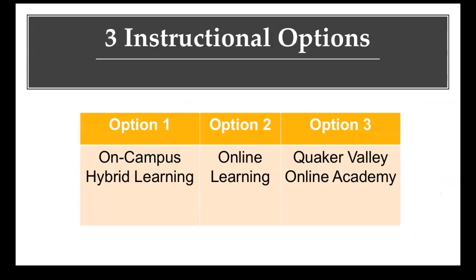There are three instructional options at Quaker Valley Middle School from which families can choose. These options include an on-campus hybrid learning option, an online learning option, and a Quaker Valley Online Academy option. In the following slides we will provide details related to each option.